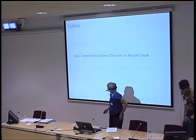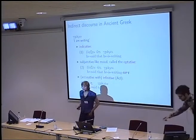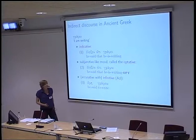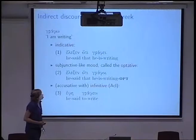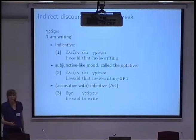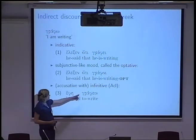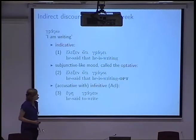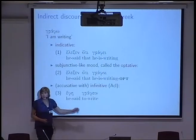Ancient Greek has three ways to report an utterance indirectly. It can use a finite clause with a normal indicative mood, as in: 'He said that he is writing'—a present tense, because the language doesn't have sequence of tense. Or it can use a finite clause with a so-called optative mood—a special mood. Or it can use an infinitival construction, literally 'he said to write', meaning 'he said that he was writing.' If the subject of the writing is the same as that of the saying, the language does not express the subject. But if it's not the same, it does express it and uses accusative case—literally, 'he said her to write', meaning 'he said that she was writing.'